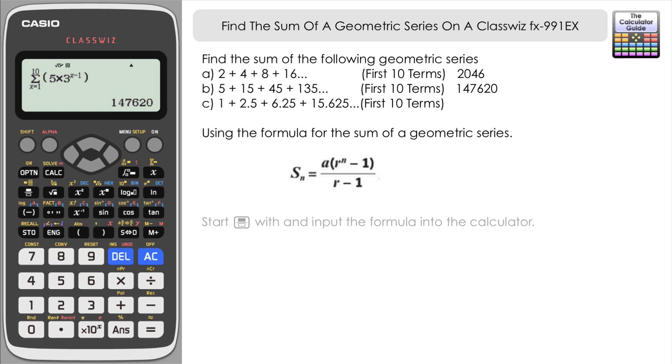So let's input that as it is into the ClassWiz. Let's start by pressing the fraction button to set up two layers. And then for the sake of completeness, even though the first term is 1 there, I am just going to input it in to get into good practice. So 1 times. And then we've got an R of 2.5 to the power of N, which is 10. In this case we want 10 terms. So N of 10 minus, and then 1. Close the brackets. And then on the bottom here the denominator we want 2.5 minus 1.